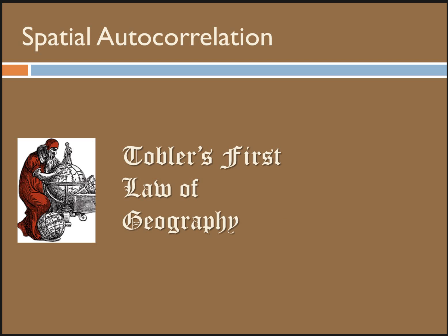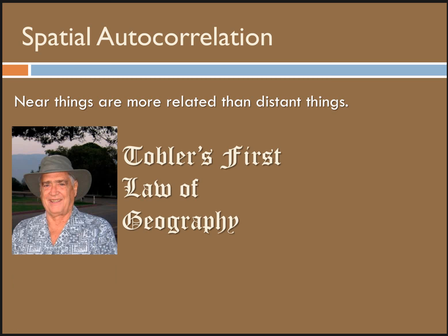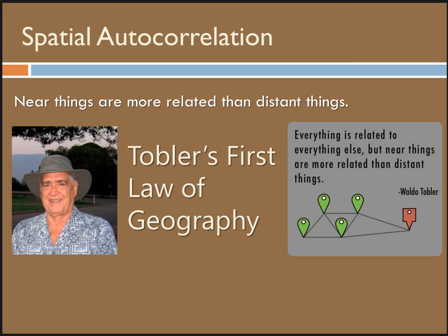We're talking about spatial autocorrelation here in part two. Who of you has heard of Tobler's first law of geography? This is the concept that near things are more related than distant things. This is Waldo Tobler, and his first law of geography states that everything is related to everything else, but near things are more related than distant things. You can see in this figure that we're talking about more than simply spatial locations — it's the attributes or values associated with the location that are relevant to the relationship.